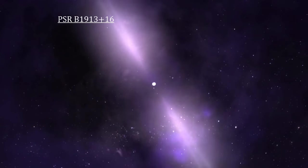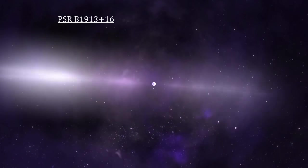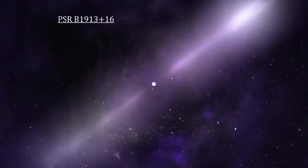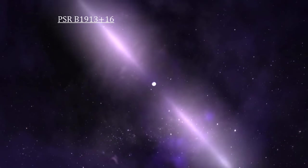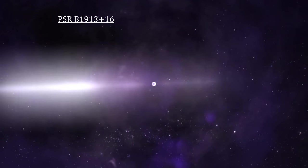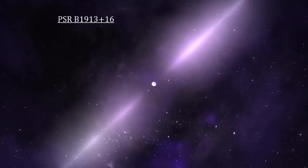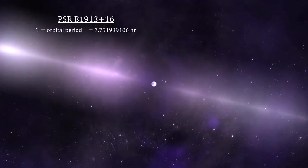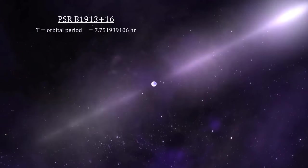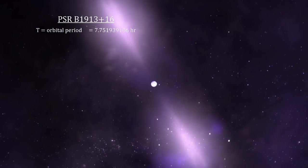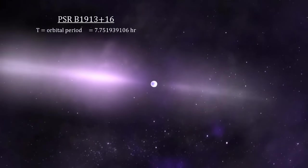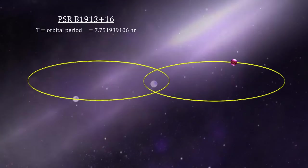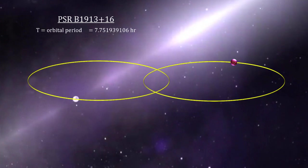This one was pulsing every 59 milliseconds indicating that the pulsar rotates 17 times per second. But Hulse and Taylor noticed that the pulsar varied regularly every seven and three quarters hours with pulses arriving three seconds earlier at some times relative to others. This meant that the pulsar was in an elliptical orbit with another neutron star. This was the first binary neutron star ever discovered.